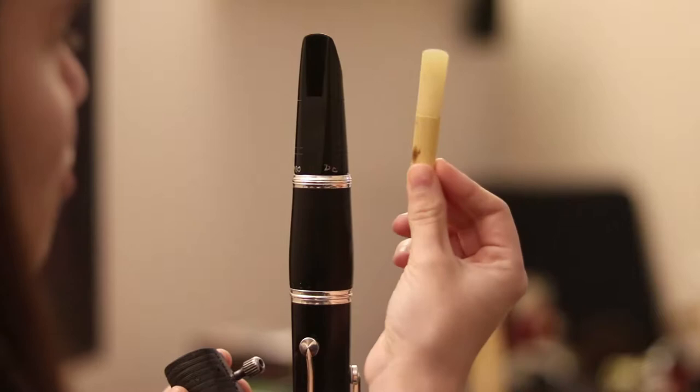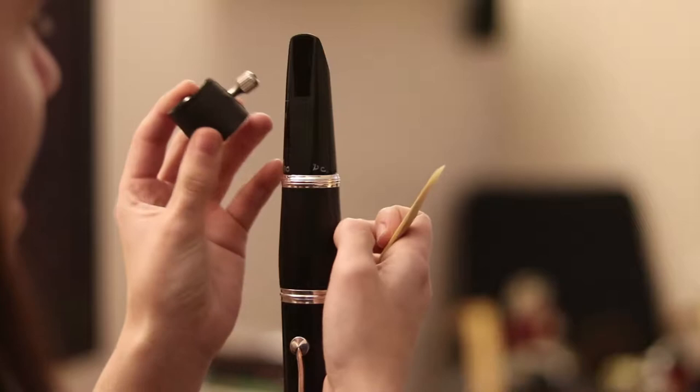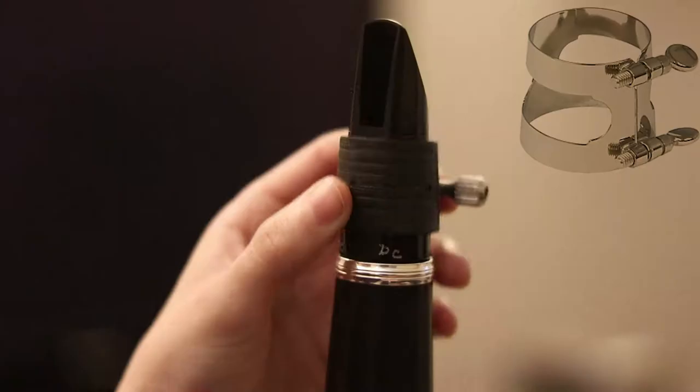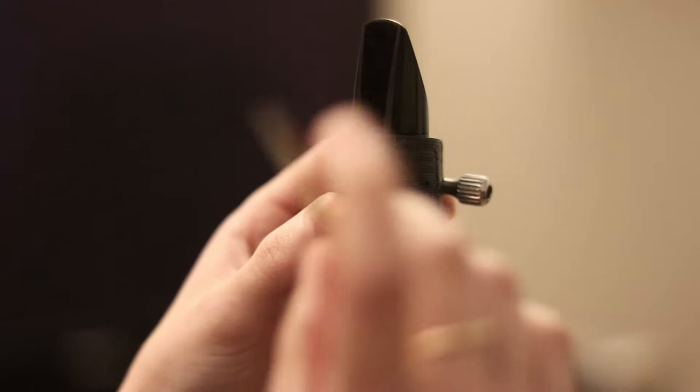Firstly you're going to need your reed and your ligature. There are lots of different types of ligatures. I'm using a leather one today which means that our screw is going to go on this side of the mouthpiece. A lot of people will have metal ligatures which will have two screws that will then sit on the front.